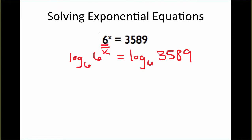And what happens here is because they have the same base, these cancel out. The logarithm base 6 and the base 6 of the exponent. So, all we're left with on the left side of the equation is x, and on the right side of the equation, we get log base 6 of 3589.